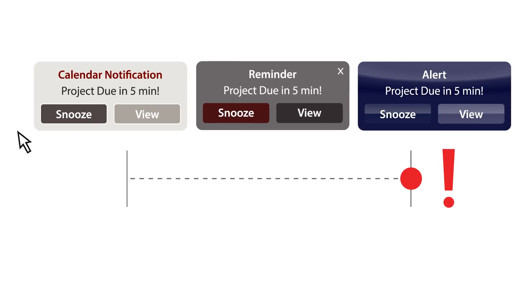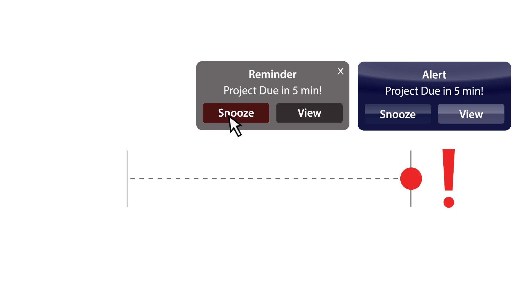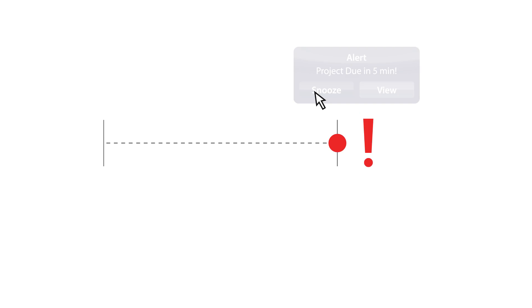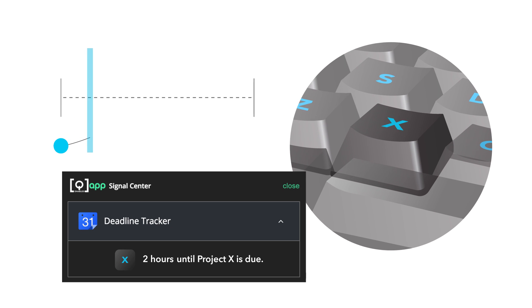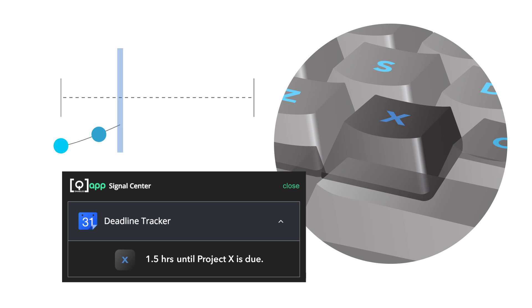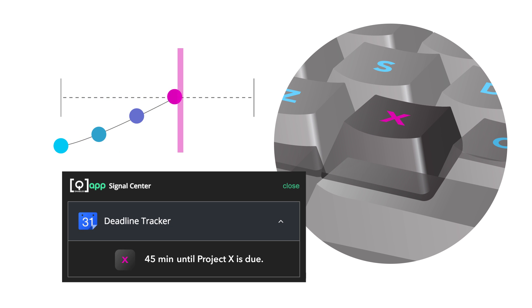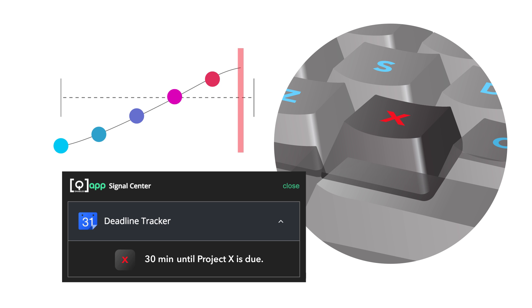Instead of relying on snoozeable momentary alerts from different devices, DOS Keyboard 5Q allows you to ambiently track subtle changes to data over time without actively seeking updates or constantly receiving new alerts, which frees you up to work on other super important things.